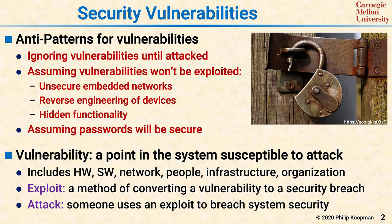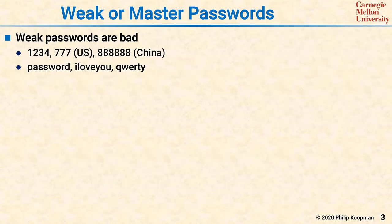A significant vulnerability is often assuming that passwords will actually be secure in practice. Poor password hygiene is a common vulnerability in embedded systems. Perhaps the most obvious way that passwords can be a problem is if they are weak or commonly used. For numeric passwords, it's common to see 1234, or 777, or 888888. If your system has one of those passwords, you can pretty much guarantee someone will try and guess it.